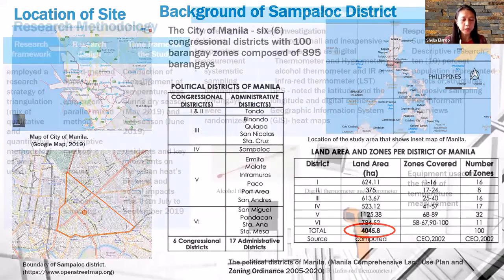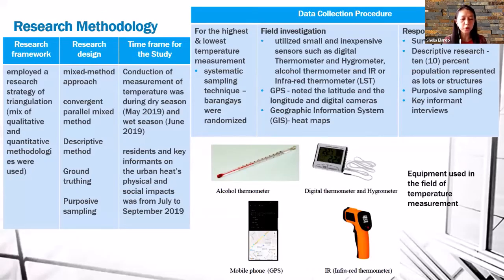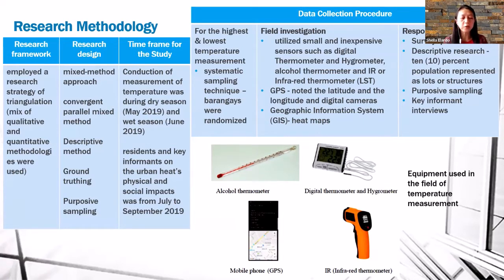For the research methodology, the study used a mixed-method approach for a comprehensive understanding of the relationship with the UHI effect, using a convergent parallel mixed method to converge and merge quantitative and qualitative data. It uses a descriptive method in choosing the site, and ground truthing helps assess and verify GIS and satellite image maps against what is physically seen on the ground. The research participants are local residents of Sampaloc, with 10 percent of the population represented as the total number of lots or structures in each specific barangay.